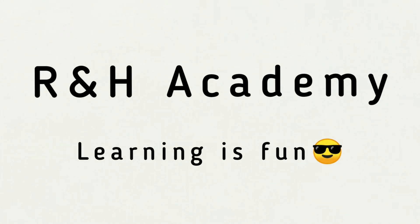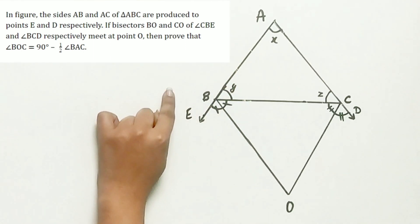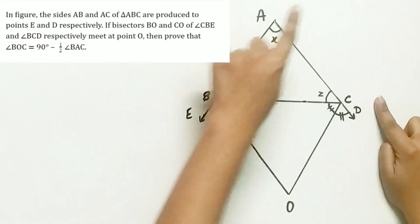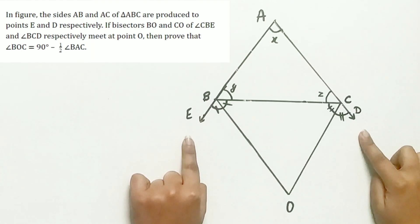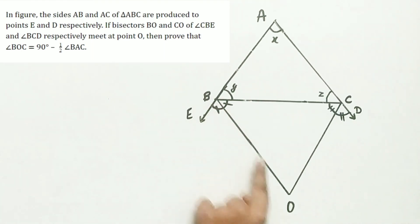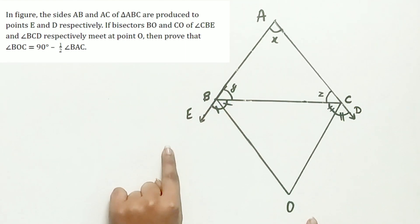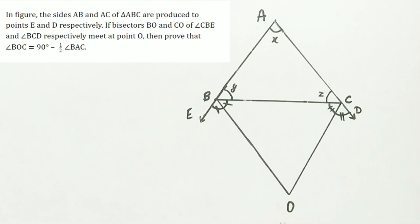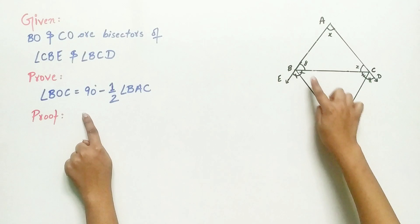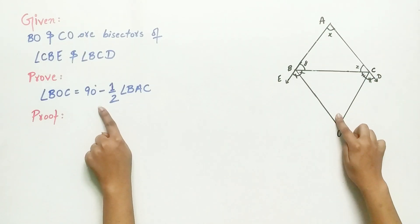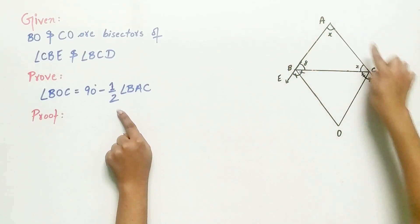Welcome to R&H Academy Channel. Today we will solve example 8 of chapter Lines and Angles. The question says: in the figure, the sides AB and AC of triangle ABC are produced to points E and D respectively. If bisectors BO and CO of angles CBE and BCD respectively meet at point O, then we have to prove that angle BOC is equal to 90 degrees minus half of angle BAC.